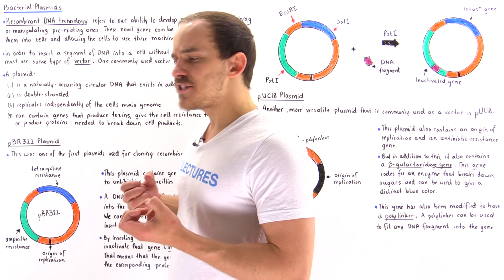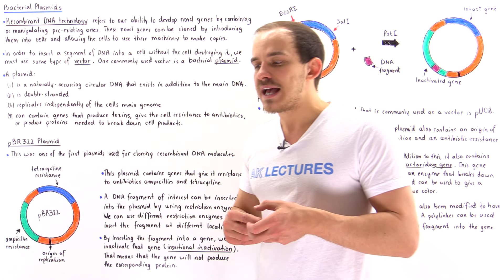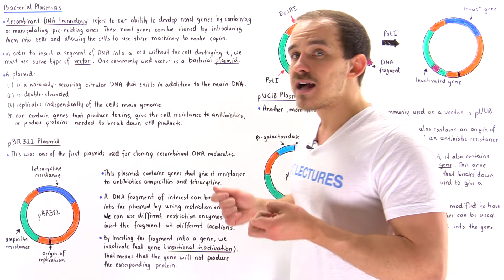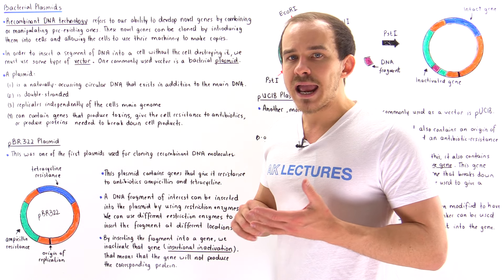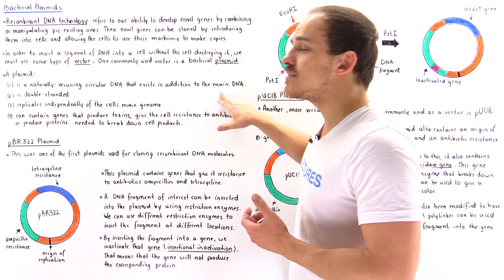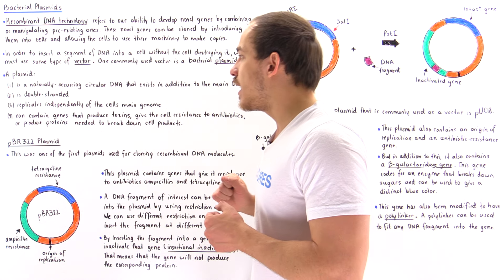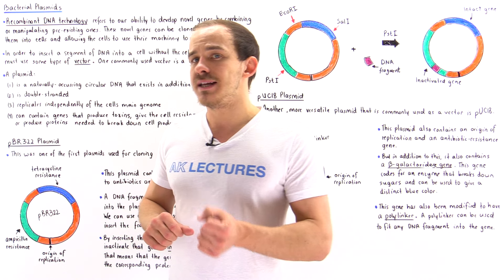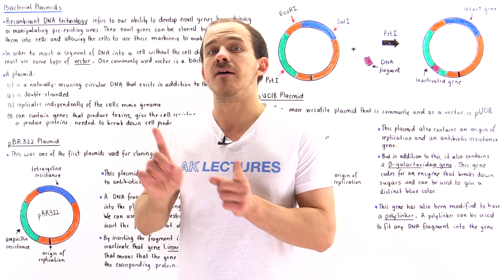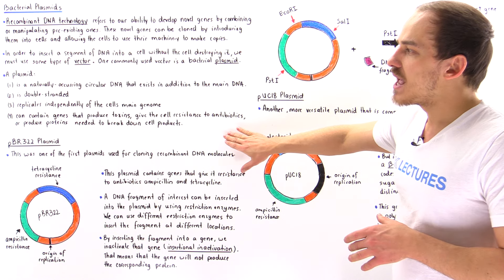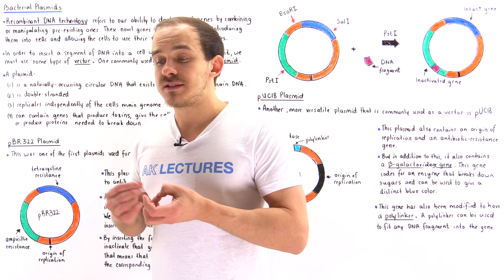Let's remember what a plasmid is. Prokaryotic cells such as bacterial cells can contain plasmids — as many as 20 plasmids inside a single cell. A plasmid is a relatively small, naturally occurring circular DNA that exists inside the cell in addition to that cell's main genome. It is a circular double-stranded DNA molecule, meaning it does not have a beginning or an end, and it is able to replicate independently of the main genome's replication process.